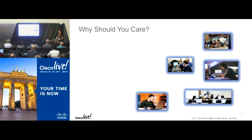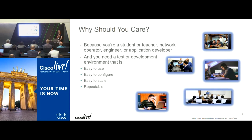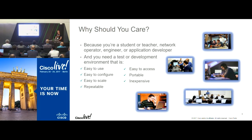VIRL is important for a variety of network engineering tasks. We've seen people using it as students in university scenarios, or learning things like the Cisco CCNA, CCIE, or CCNP. We've seen network operators using it to test their networks before implementing changes, and application developers in DevNet. What we're really looking for is something that allows people to quickly build an environment for testing and development — making it easy to use, easy to configure, easy to scale out, repeatable for change validation, portable for sharing with a team, and inexpensive, because buying equivalent hardware gear would be quite expensive.